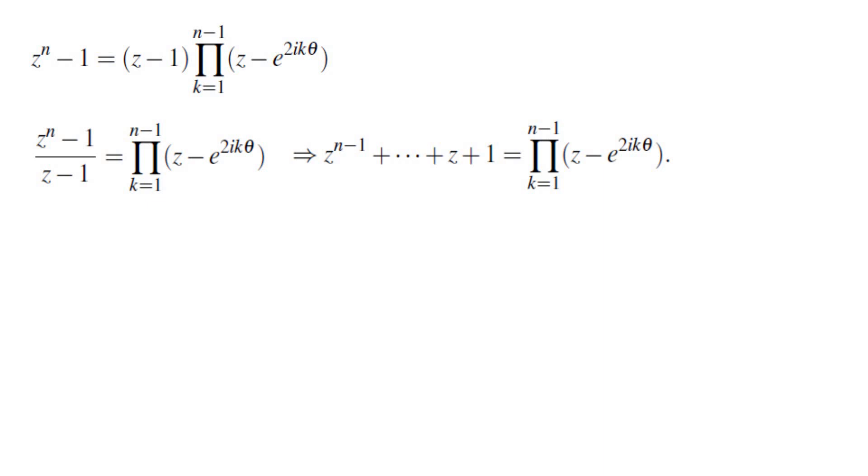And the right side is untouched. Now, I am able to substitute z equals 1 to get the exact product that I wanted. So, the product that I wanted is going to be, in fact, n.